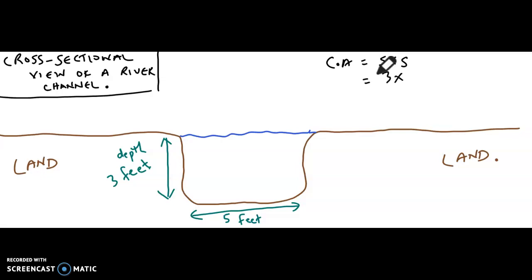3 multiplied by 5, which is 15 square feet. The cross-sectional area for this particular stream is 15 square feet.